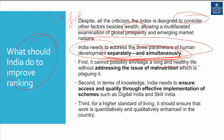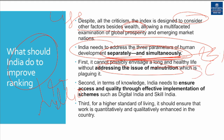India cannot possibly envisage a long and healthy life without addressing the issue of malnutrition. We have such a huge number of malnourished children — 144 million people go hungry every day in India, and 23% of the world's malnourished are in India. Despite the Supreme Court observing that the right to food is a right to life under Article 21, 62,000 tons of food grains were damaged between 2011 and 2017, and over 9,000 tons of food were lost in 2016-17 alone.